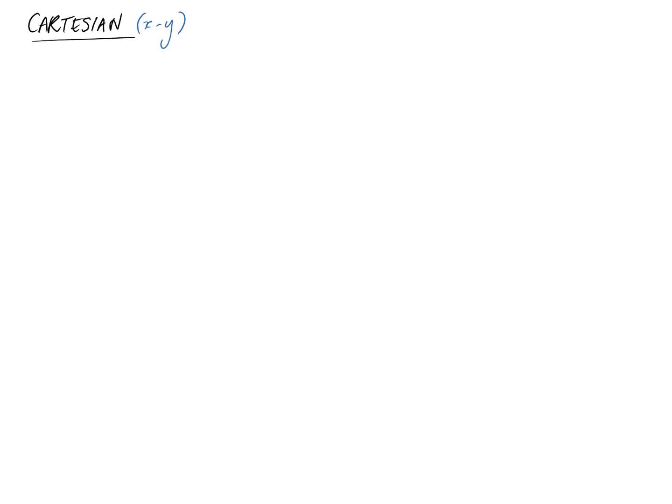This video is going to look at the three different types of coordinate systems that are popular for use in dynamics. They are the Cartesian, the normal tangential, and the polar coordinate system.